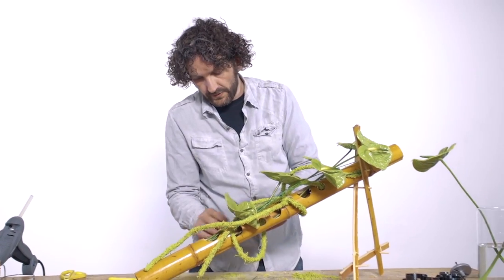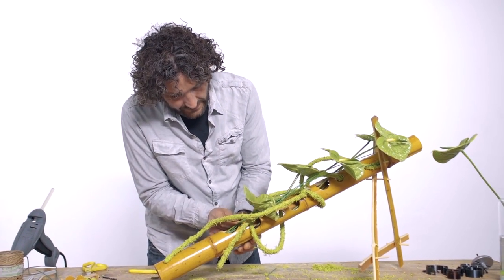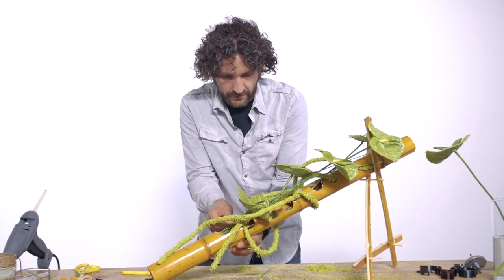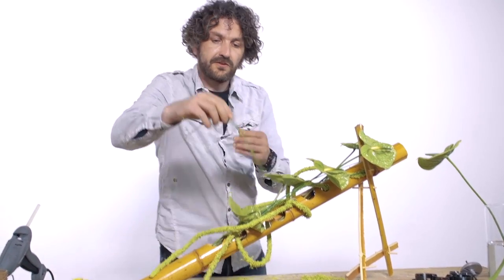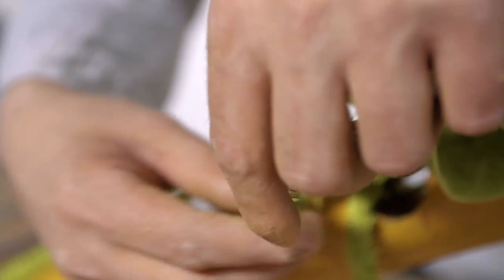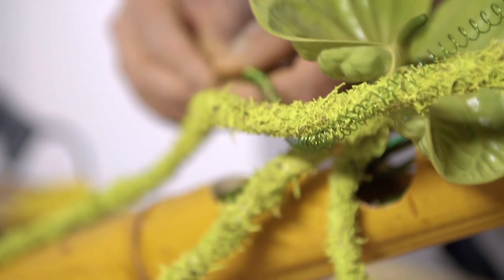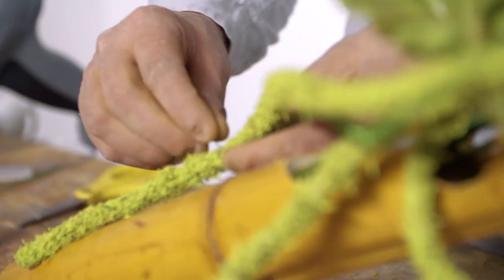And once we have our flowers in, we can start thinking about adding our beautiful wire details. We're going to stretch it a little bit out, creating that large spiral shape. And we're just going to connect it really carefully around our interior, over and under our materials, just creating that little sparkle.